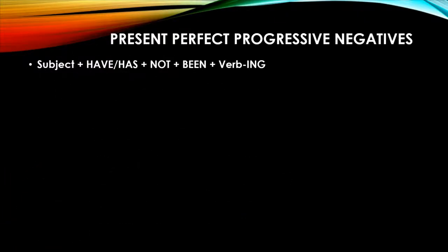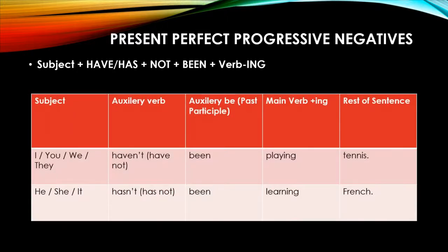Now we have the present perfect progressive in negative tense. That means if we get a positive sentence in present perfect progressive, how will it look like when we make it negative? The structure is given below: subject plus have or has plus not. We will add not after this auxiliary verb or helping verb, and then we will add the past participle form which is been, and then verb plus -ing.